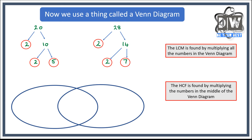Let's fill in the Venn diagram. For 20 the product of primes is 2 times 2 times 5, and for 28 it is 2 times 2 times 7. We can see that both lists contain two 2s, so those go in the middle because they are shared. The 5 is unique to 20 and the 7 is unique to 28.